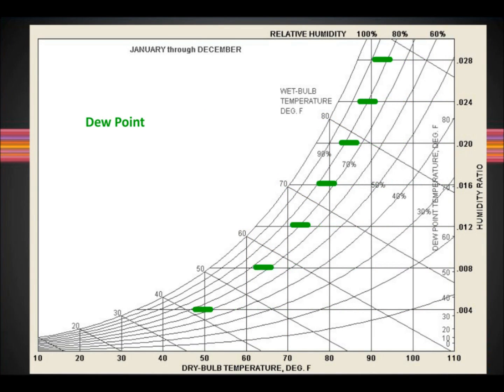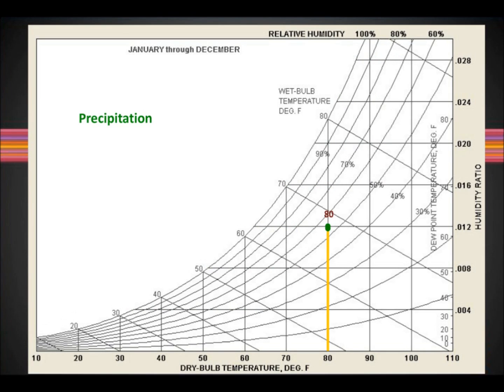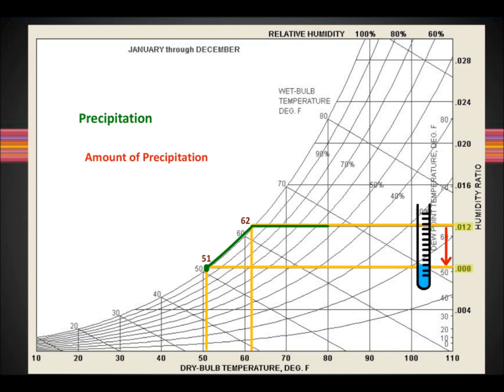Dewpoint temperature is the temperature of an object that will cause water to precipitate out on its surface. Precipitation is the amount of water that is taken out of the air by a surface that is below the current dew point temperature.